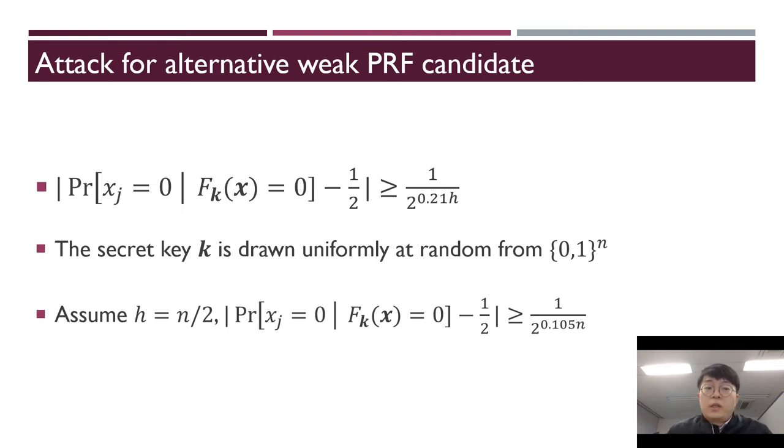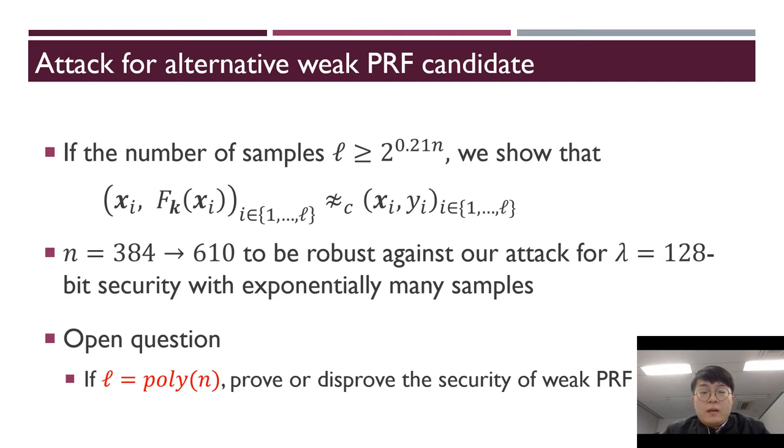The difference of conditional probability from 1 half is similar to 1 out of 2 to the power of h times 0.21. The secret key k is drawn uniformly at random from n bits, so we can assume h is n/2. Then the difference of conditional probability from 1 half is similar to 1 out of 2^(0.105n). If the number of samples is larger than 2^(0.21n), we show that we can distinguish weak PRF candidate samples from uniformly random samples. Therefore, n must grow from 384 to 610 to be robust against our attack for 128-bit security with exponentially many samples.